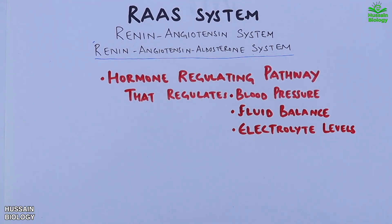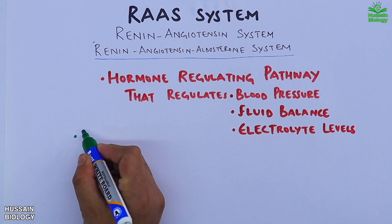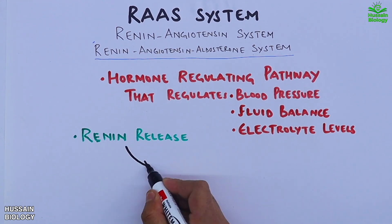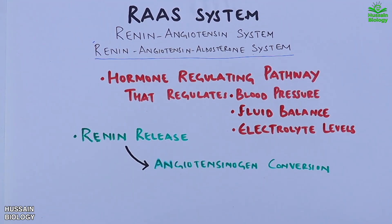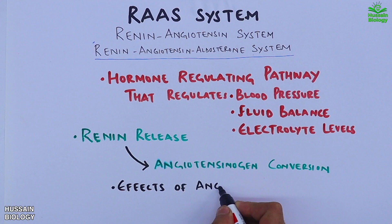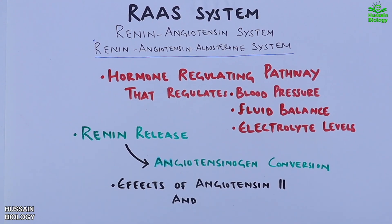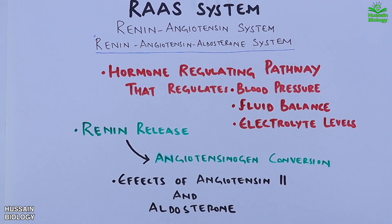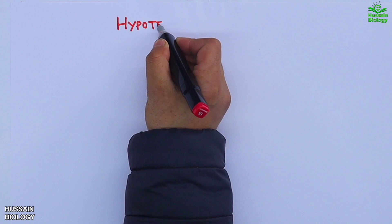The RAS system has two basic steps: renin release and angiotensin conversion. Then we see the effects of Angiotensin 2 and aldosterone. Now let's get to the detailed mechanism.